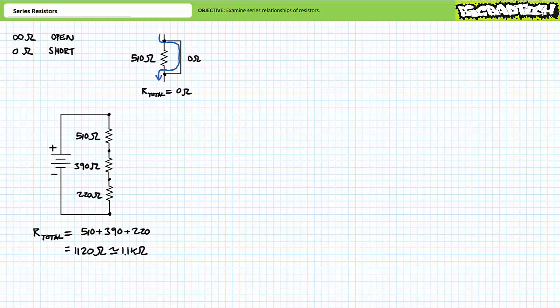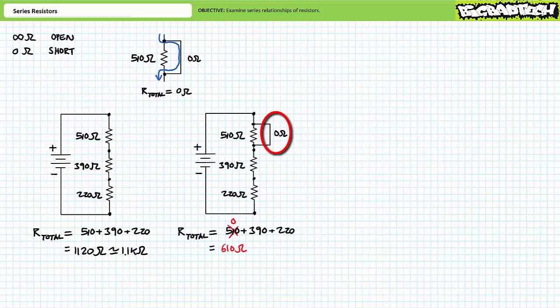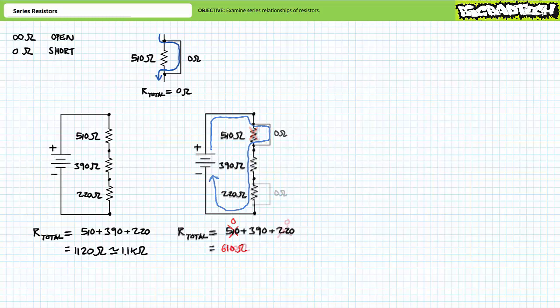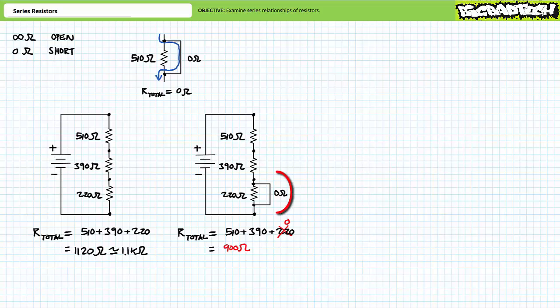Consider the series combination of a 510, 390, and 220 ohm resistor — ordinarily 1120 ohms. If we include a short around the 510 ohm resistor, all current routes around it, and the total resistance becomes only the series combination of the 390 and 220 ohm resistors, or 610 ohms. If instead we short the 220 ohm resistor, the source sees only the 510 and 390 ohm resistors for a total of 900 ohms.